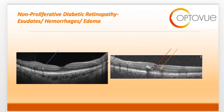The blue arrow on the left side of the slide is pointing to a cluster of exudates. We also commonly see intraretinal hemorrhages and edema. The red arrow on the right is pointing at a hyporeflective space correlating with a serous pocket of fluid, again a result of leaking blood vessels. The orange arrow is pointing to an intraretinal hemorrhage. It's important to note that both exudates and hemorrhages will appear hyperreflective on the OCT.